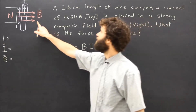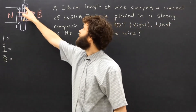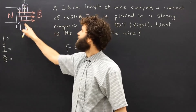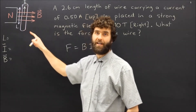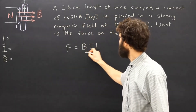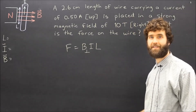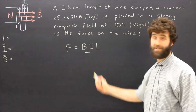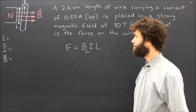Note that the magnetic field B is perpendicular to the direction of the current I. Sometimes we use a symbol to indicate that, and that's how this formula is intended to be used.